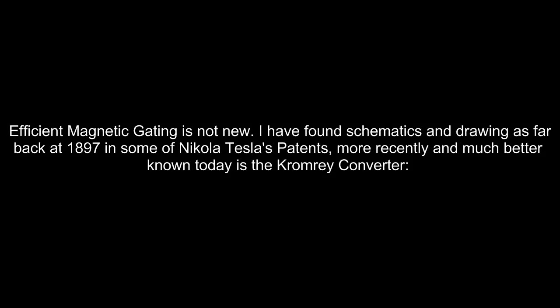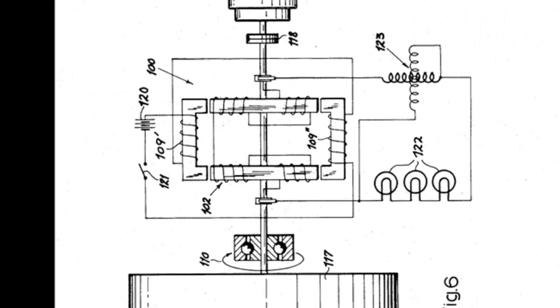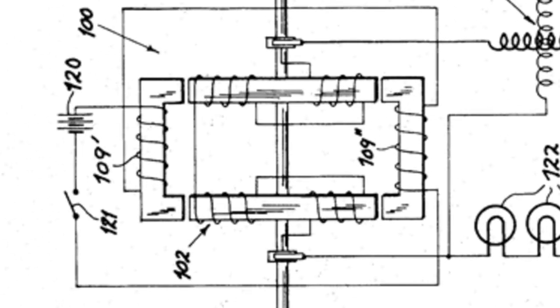Efficient magnetic gating is not new. I have found schematics and drawings as far back as 1897 in some of Nikola Tesla's patents. More recently and much better known today is the Cromery converter.